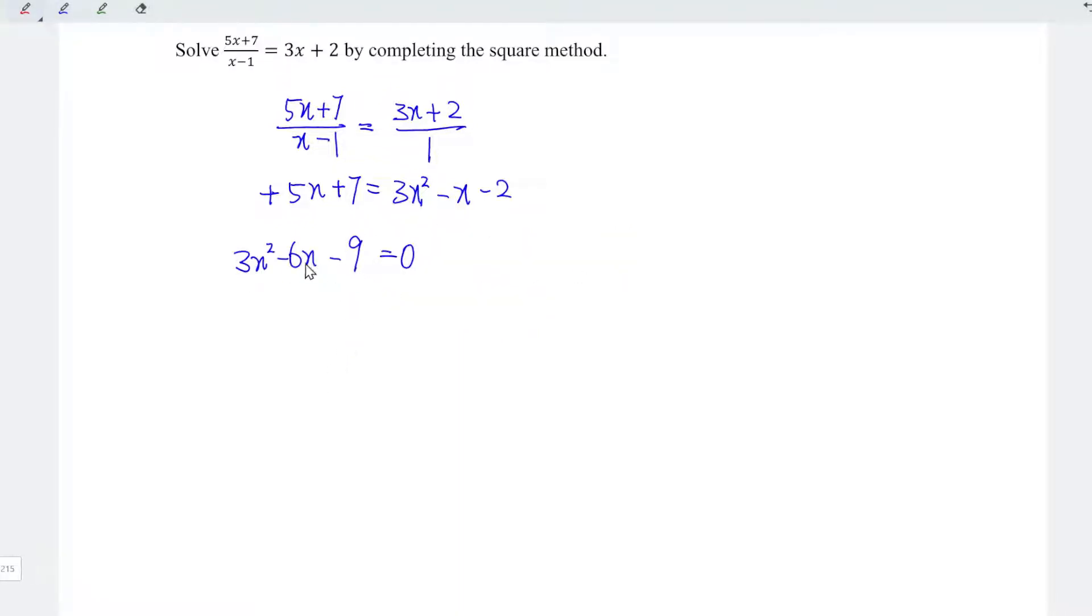Since all these three numbers are multiples of 3, I'm going to divide the entire equation by 3. So which means we have x squared minus 2x minus 3 is equal to 0.